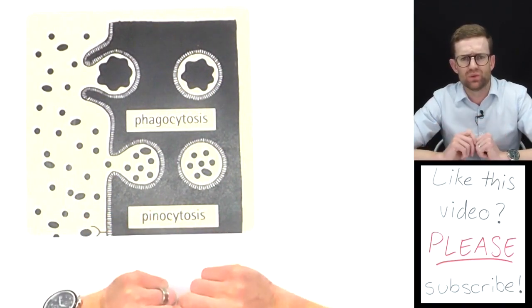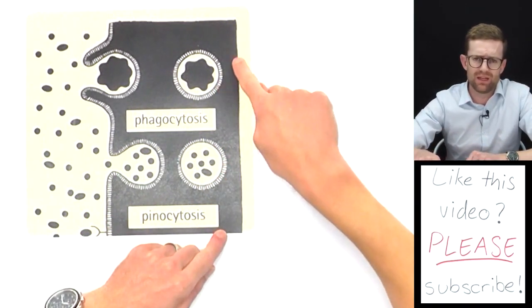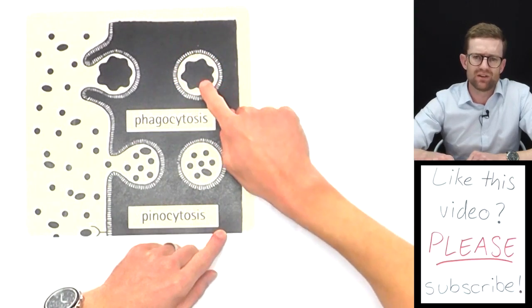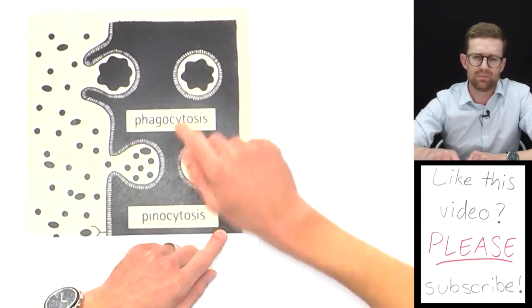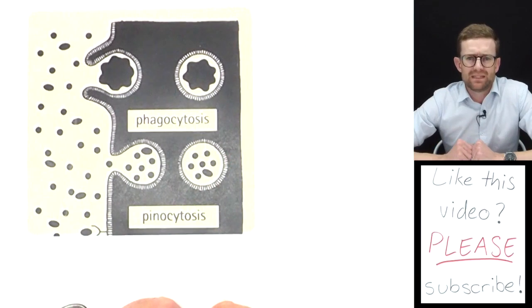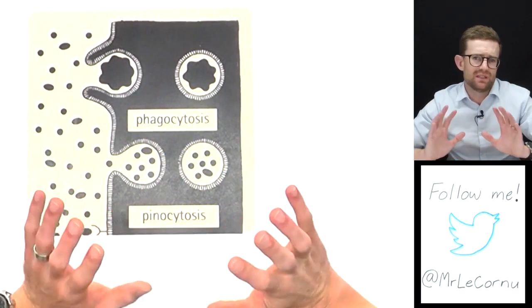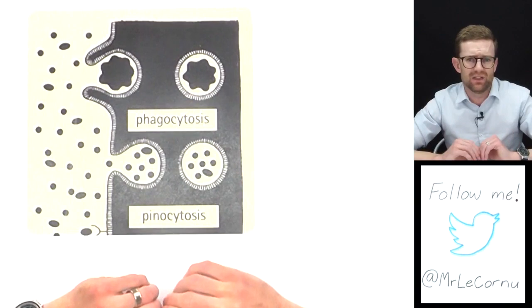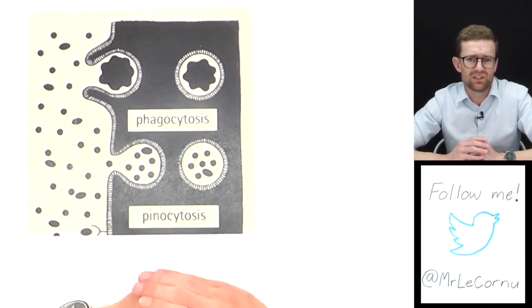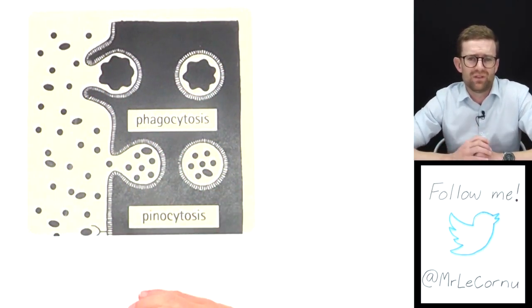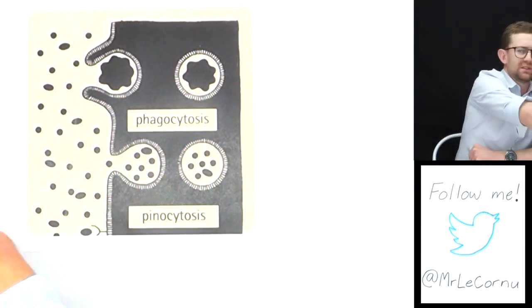And then the way the cell digests and accesses what's inside of the food vacuole is by these small vesicles called lysosomes, which contain digestive enzymes. They find their way to the food vacuole and then release their digestive enzymes, which break down the food vacuole and allow the cell to access the particle that's inside. An example of phagocytosis in action is in our immune system, where our white blood cells can take in any potentially harmful bacteria—the whole bacterial cell—take it in through phagocytosis and then destroy that bacterial cell as a way of keeping us healthy.